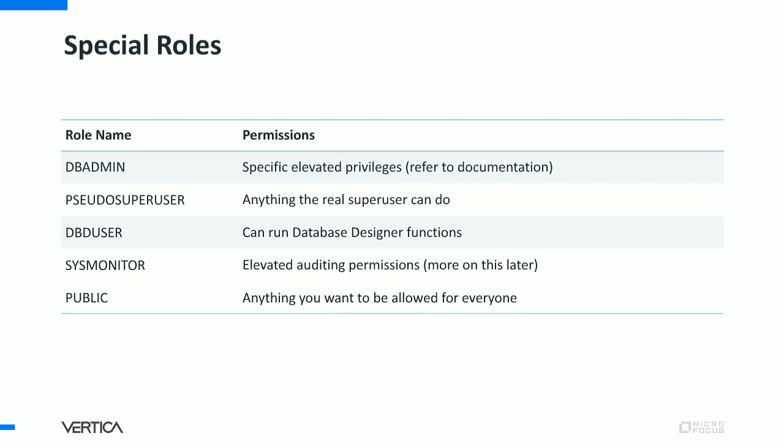These are the special roles in Vertica. First, dbAdmin — this is a role, not the dbAdmin user, and it has specific elevated privileges, though less than the super user. The pseudo super user role can do anything the real super user can do, and you can grant it to whomever. The dbD user role can run database designer functions. Sysmonitor gives you elevated auditing permissions. And finally, public is a role that everyone has all the time — anything you want allowed for everyone, attach it to public.